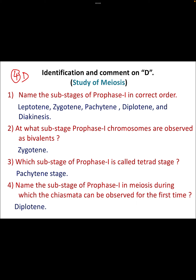If a meiosis slide is there, you can get a question on meiosis. So let's get started. Name the sub-stages of prophase 1 in correct order: that is leptotene, zygotene, pachytene, diplotene, and diakinesis. You can remember this as LZPDD, or as LZPD2 — where the second D stands for diakinesis, meaning division, as division happens in all stages.